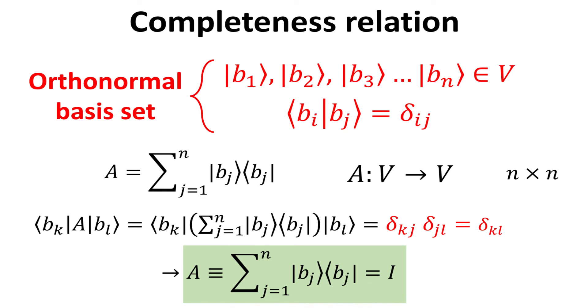The outer product allows us a convenient way of demonstrating the completeness relation, as we will show in this slide. Consider an orthonormal basis set in the n dimensional vector space V, namely b1, b2 and so on. We define an operator A.